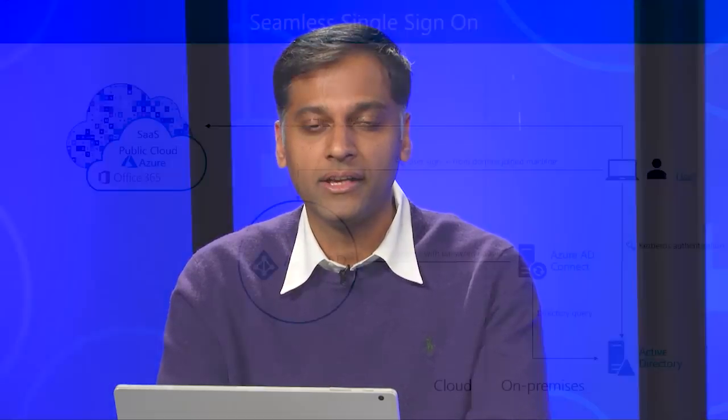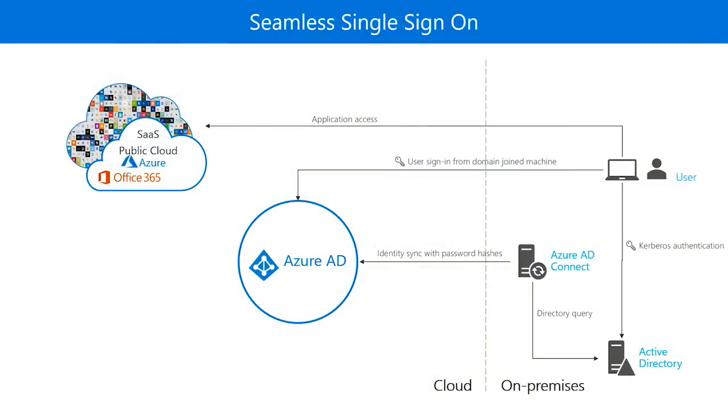You should combine password hash sync with this complementary feature called seamless single sign-on. Seamless SSO allows users to automatically sign in to Azure AD if they're on their corporate devices connected on their corporate network. When enabled, they don't need to even type in their passwords to get into Azure AD, so it actually makes the user experience a whole lot better. This feature is also set up using Azure AD Connect.